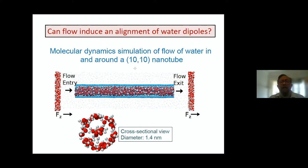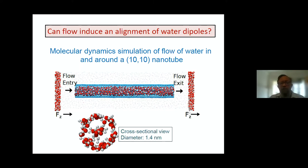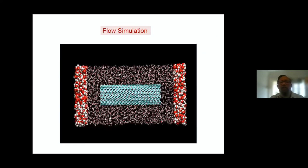This is a particular (10,10) nanotube, which has a diameter of 1.4 nanometers. If I look at the cross section of this nanotube, we see that there is a ring of water near the surface of the nanotube, and in the center there is a line of water molecules. This is the arrangement of water molecules when they're inside the nanotube. We have a cylinder of water and then we put this nanotube inside, with water molecules to the left and water molecules to the right.